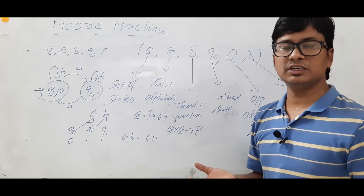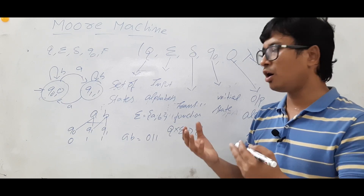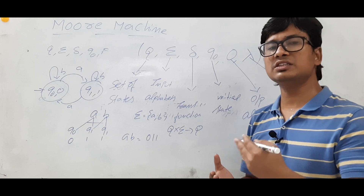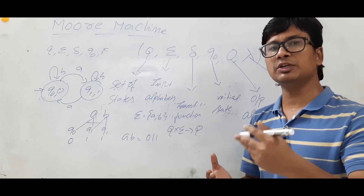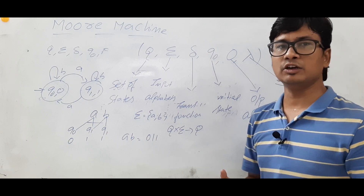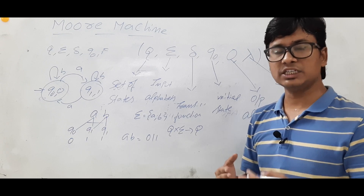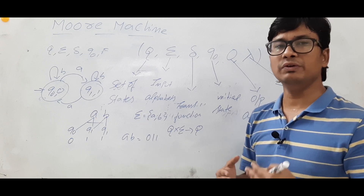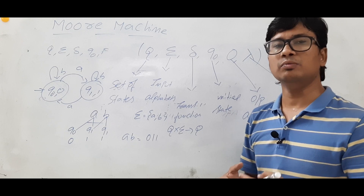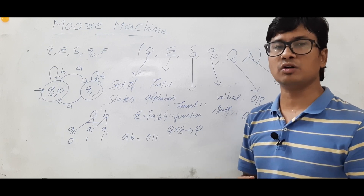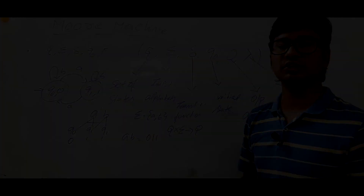I hope you have understood the representation of a Moore machine and how output is generated for a given input, as well as the difference between finite automata without output and finite automata with output. In the next video we will take a few examples for constructing a Moore machine so that you will understand the concept in a better way. Thank you for watching my video.